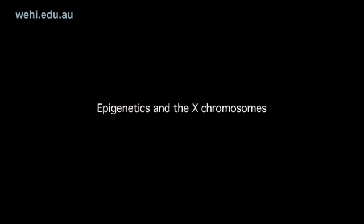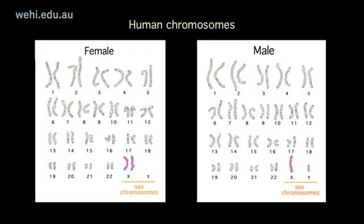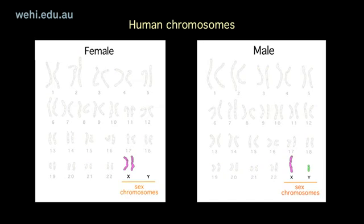Epigenetics and the X chromosomes. Humans have 23 sets of chromosomes. The sex chromosomes, X and Y, determine the sex of an individual. Females have two X chromosomes, while males have one X and one Y chromosome.